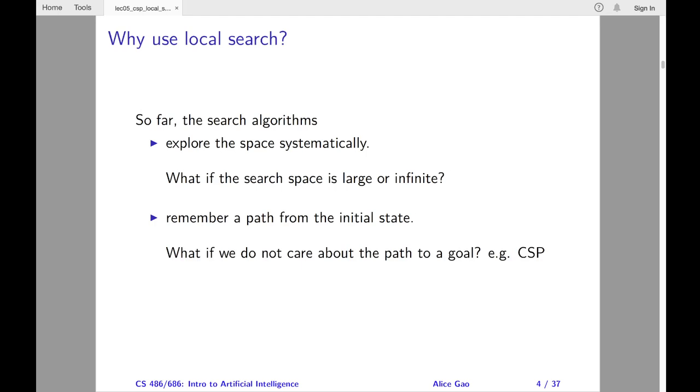However, for a constraint satisfaction problem, such as four queens, all we care about is finding a state that satisfies all the constraints. We don't care about the process of reaching that state. The order in which I place the four queens on the board or moving them around really doesn't matter. Only the final board matters.